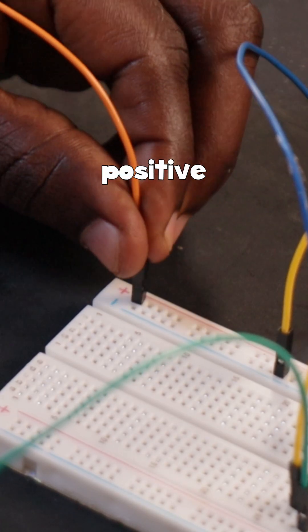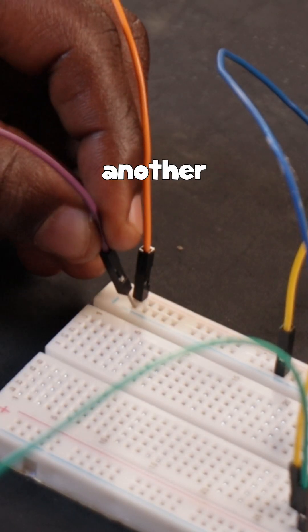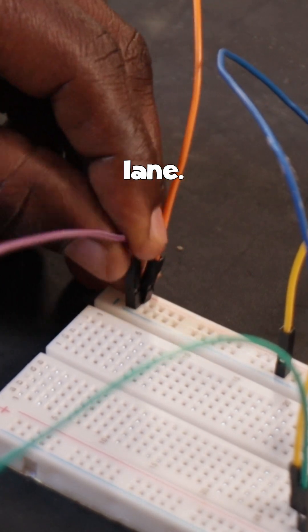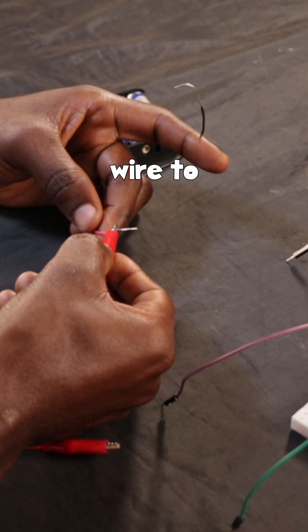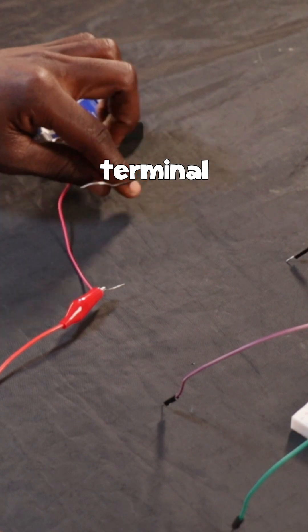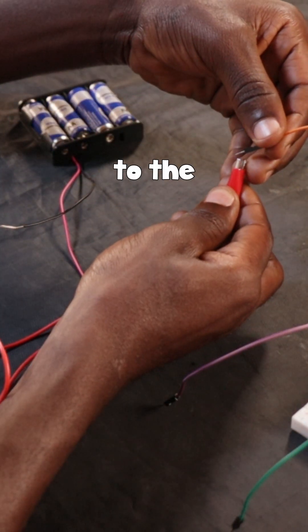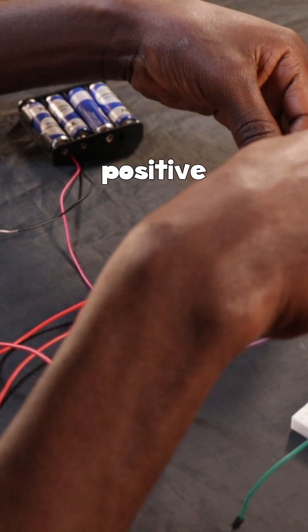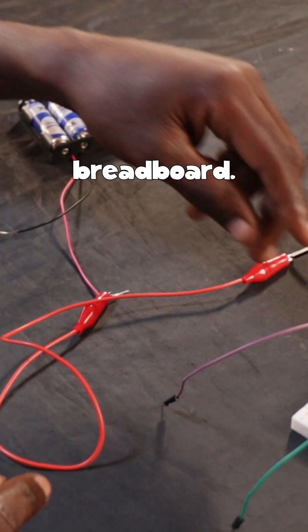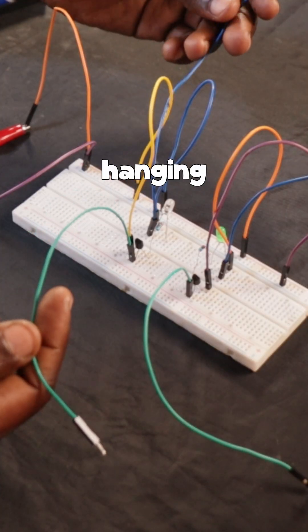I'm going to put a jumper wire in the positive lane and another jumper wire in the negative lane. I'm going to use the crocodile wire to connect from the positive terminal of the battery to the jumper wire coming from the positive lane of the breadboard. These hanging wires